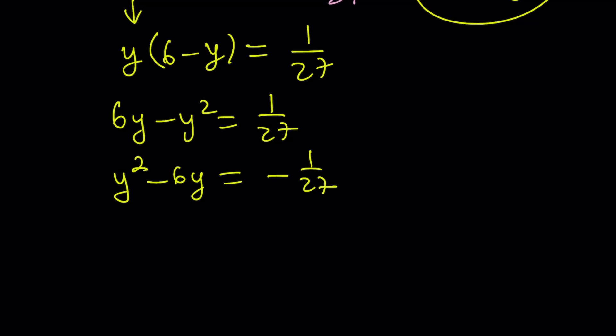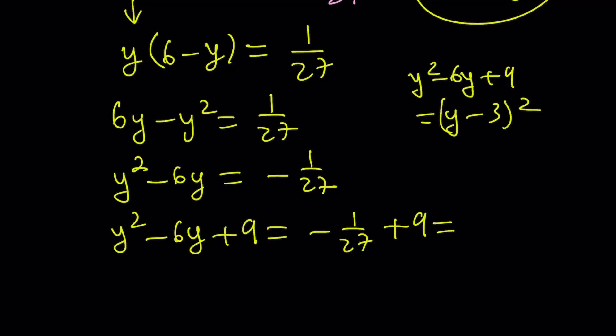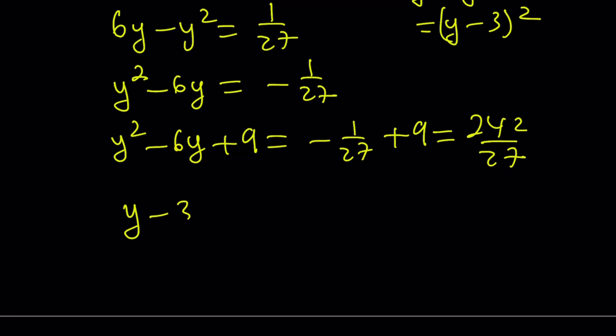Now my goal is to complete the square. As you should know, y² minus 6y plus 9 is y minus 3 quantity squared. So if I can add 9 to both sides, then I get a perfect square. And this becomes negative 1 over 27 plus 9, which can then be written as 9 times 27 minus 1 divided by 27. And that is going to equal 242 divided by 27. Now the left-hand side is a perfect square. So I can write it as y minus 3 quantity squared. And the right-hand side, this number, I'm going to write it as a product of two fractions, one of which is a perfect square. How about 121 over 9 multiplied by 2 thirds.